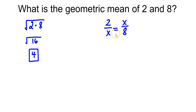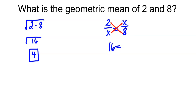How do you solve a proportion? You would cross multiply. So I'd multiply across this way and I would get 2 times 8, which is 16. And then I'd multiply across this way, x times x, and I get x squared.